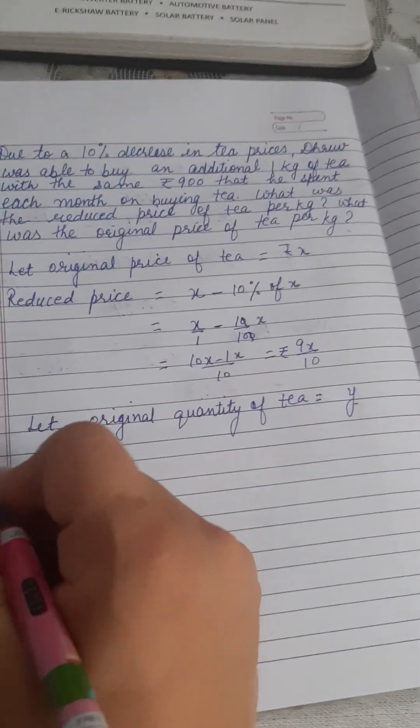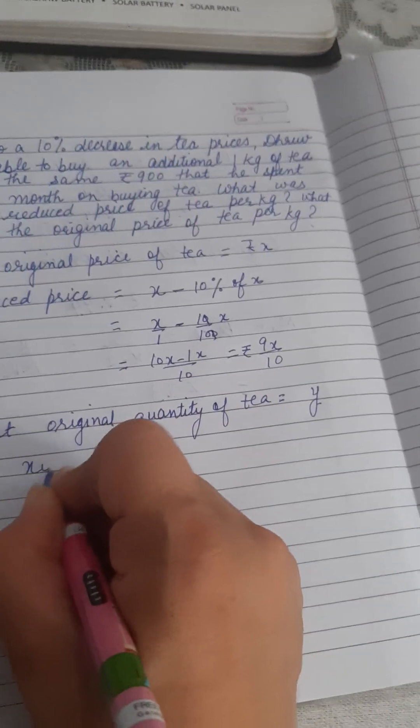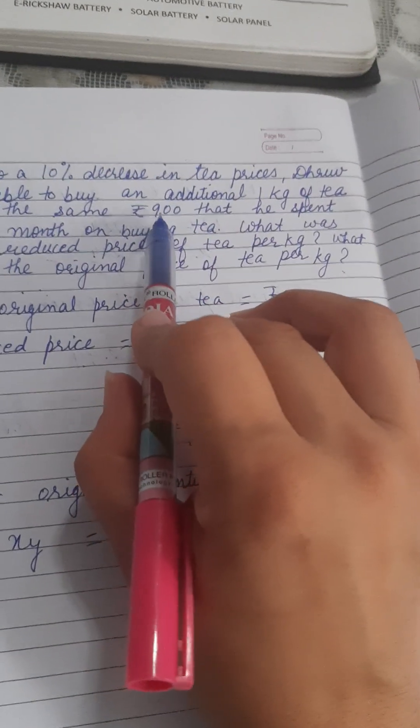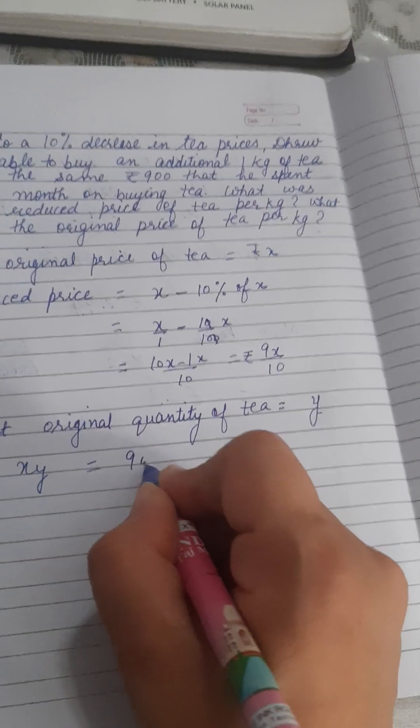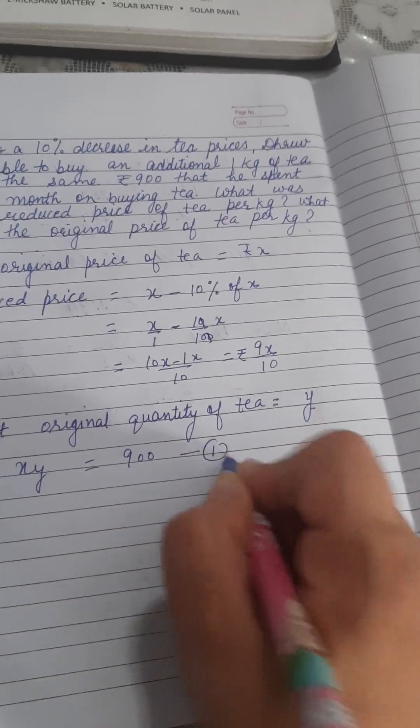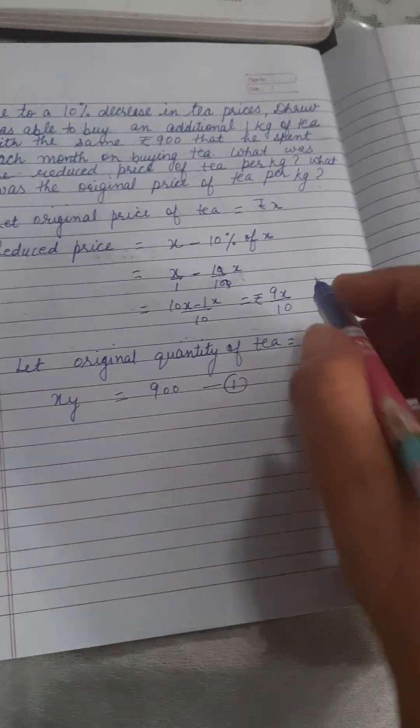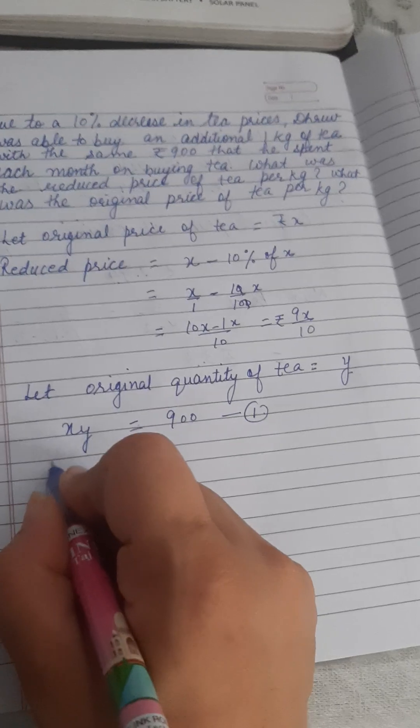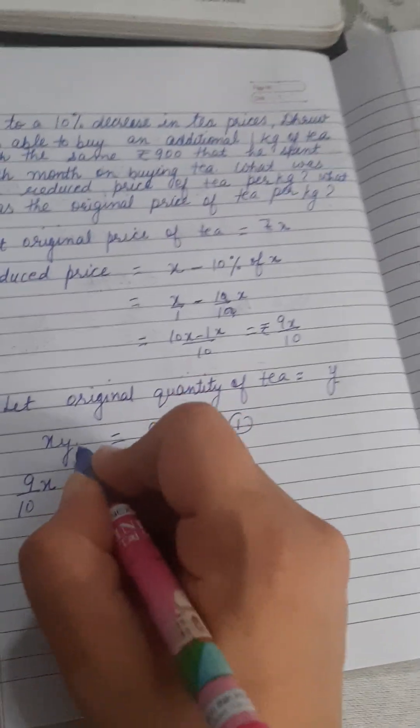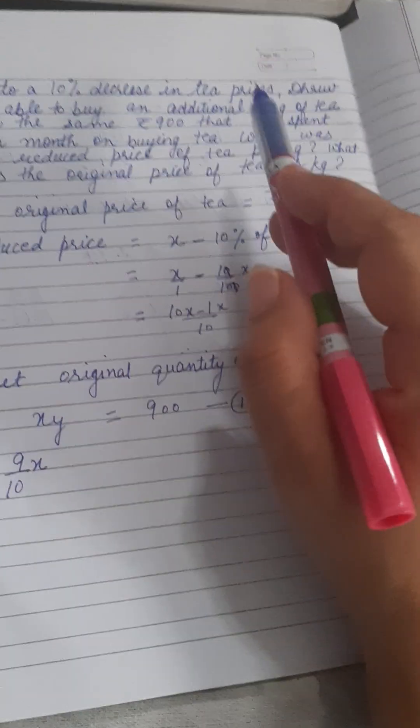The quantity is Y. It means product of these, XY, is given rupees 900. This is equation 1. And the second equation is: the reduced price is 9 by 10 X, and when the price is decreased.